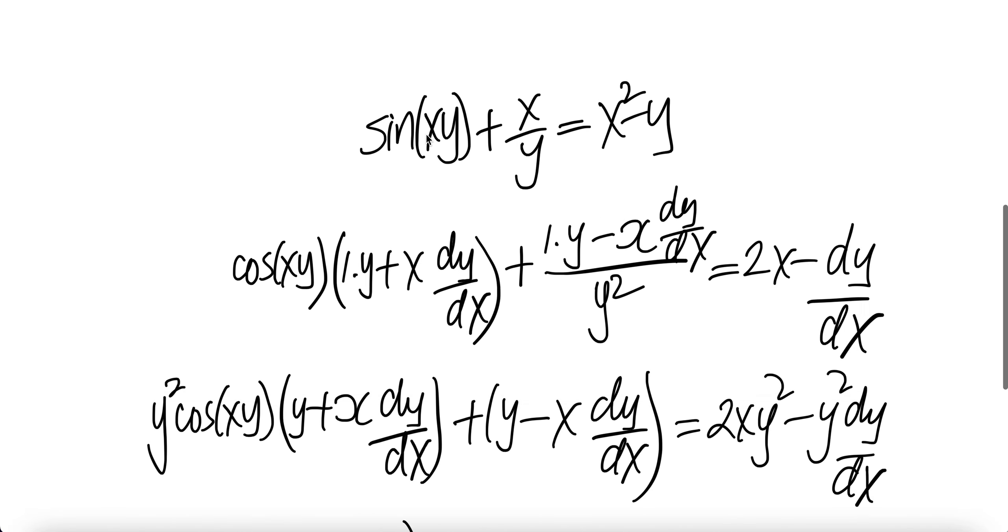Take derivative on this. Derivative of sine is cosine xy times the derivative of inside. It will be a derivative finding the derivative of a product of two functions, applying the product rule. Derivative of x is 1 times the second function plus first function times the derivative of the second function.